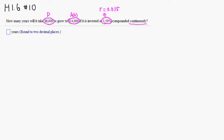Let's write down the formula. The formula is A(t) equals P times e to the rt. The future value is 14,000, the initial investment is 8,000, e to the r value is 0.035, and T is unknown.